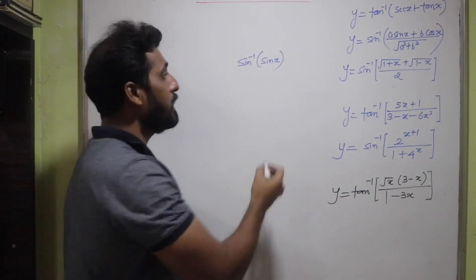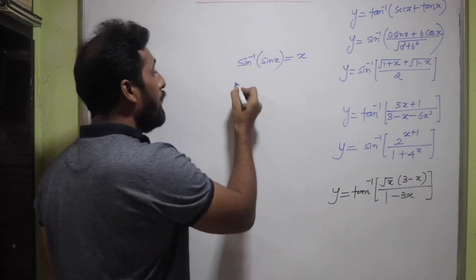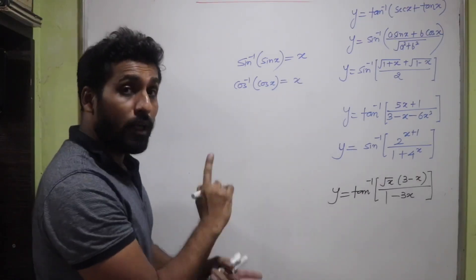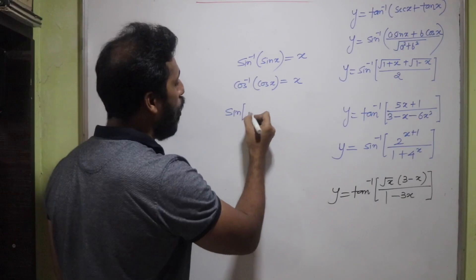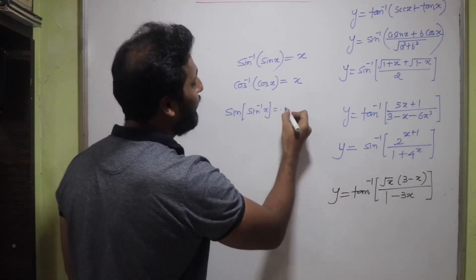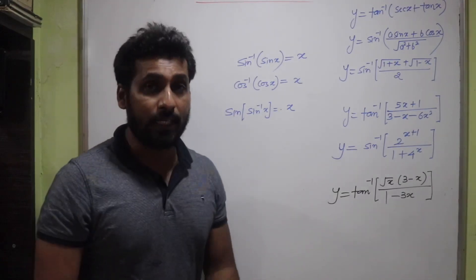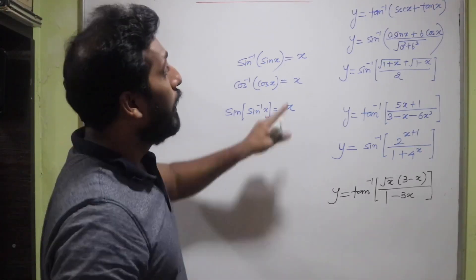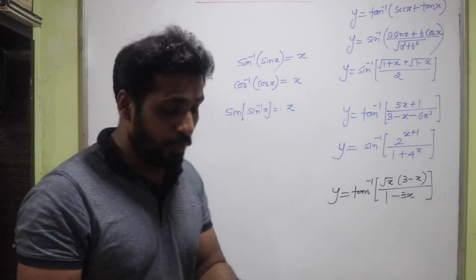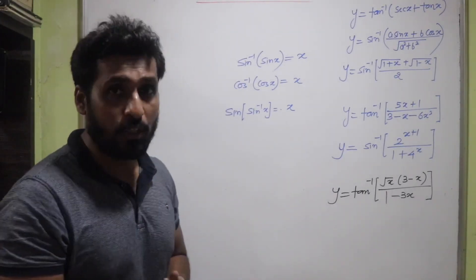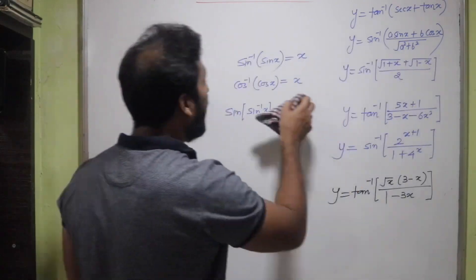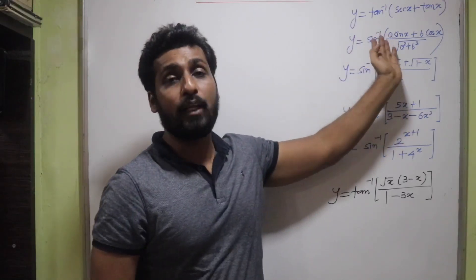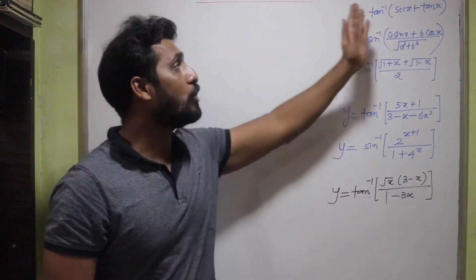Remember that sin⁻¹(sin x) = x, cos⁻¹(cos x) = x, and sin(sin⁻¹ x) = x. These are important identities. If you try to differentiate tan⁻¹(sec x + tan x) directly using the composite function rule, it will take too much time. So we simplify the expression inside first.